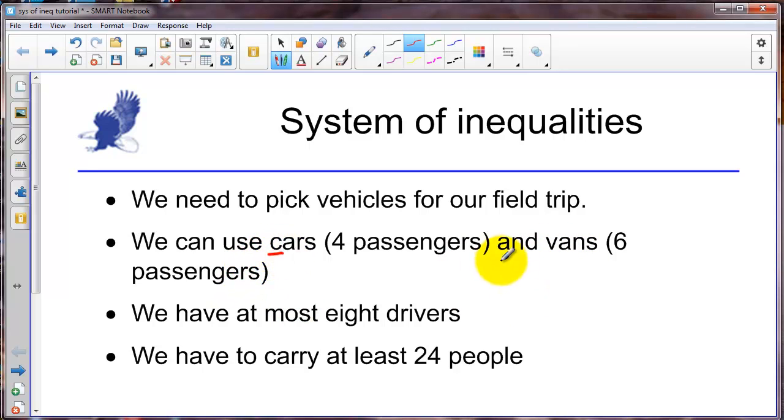So this inequality is going to be cars plus vans have to be less than or equal to eight because each one requires a driver.